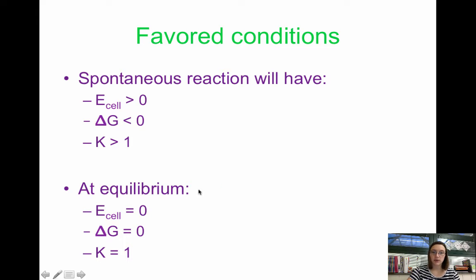At equilibrium though, this is going to be important, at equilibrium, cell potential is zero, delta G is zero, and K equals one.